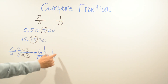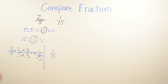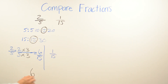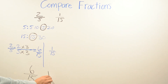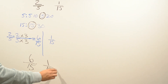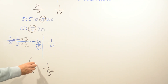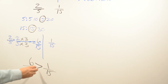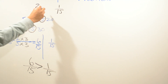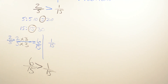For one fifteenth, I don't need to do anything because it's already over fifteen — it stays as one over fifteen. Now comparing six over fifteen and one over fifteen: six is bigger than one, so we put the greater than sign. Two fifths is greater than one fifteenth.